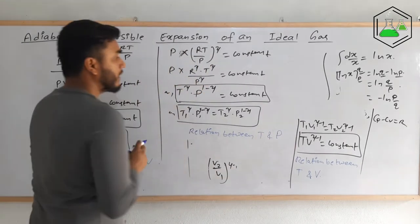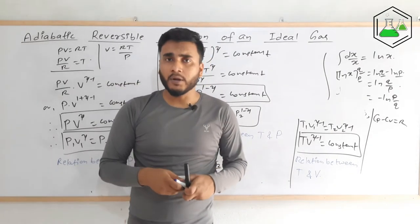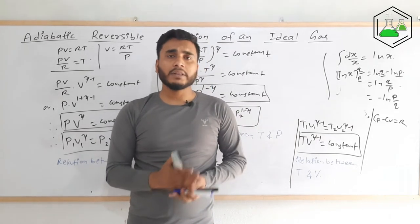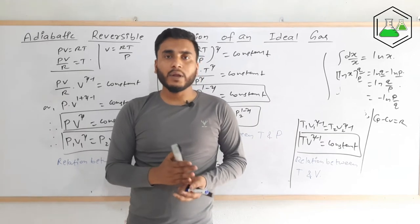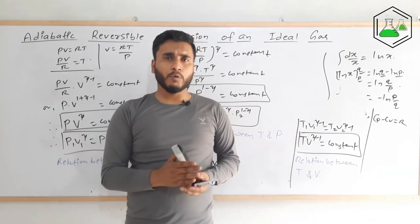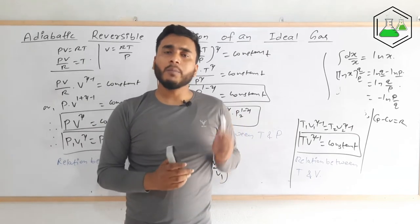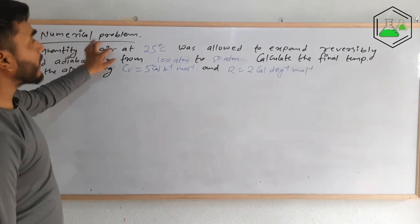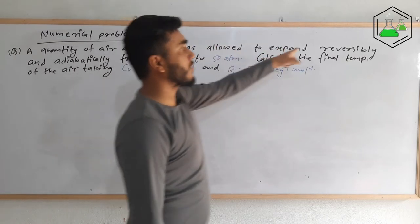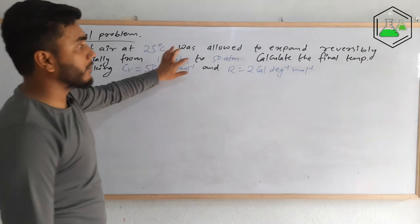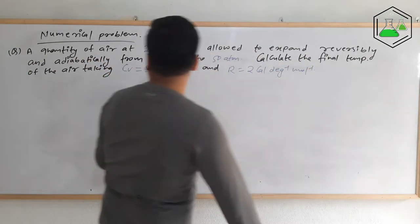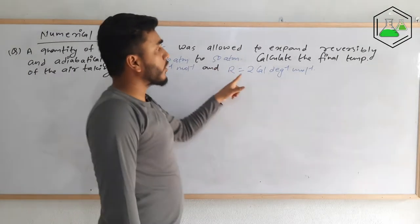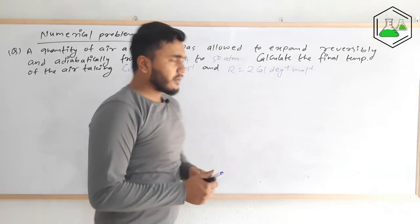These are the important relations to solve numerical problems in thermodynamics. Now, by using these relations, let us solve a numerical problem to see what type of problems appear in the thermodynamics chapter and in examinations. A quantity of air at 25°C was allowed to expand reversibly and adiabatically from 180 atm to 50 atm. Calculate the final temperature of the air, given Cv = 5 cal/K/mol and R = 2 cal/degree/mol.